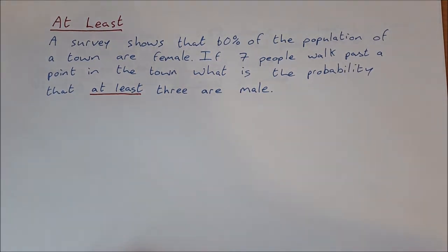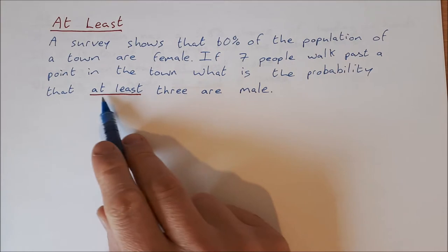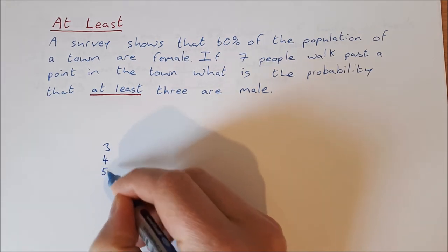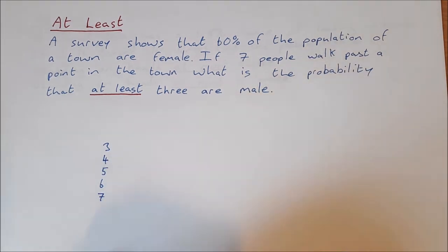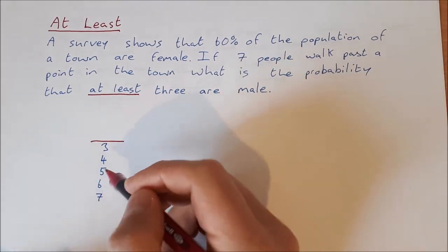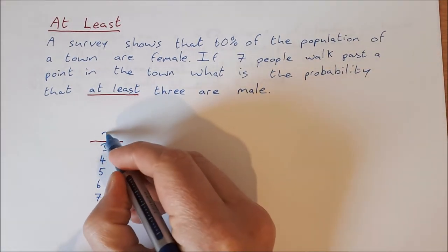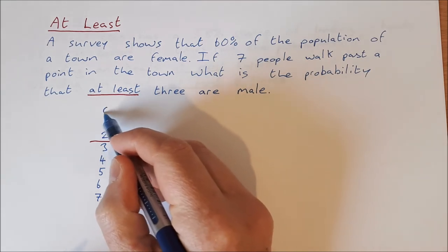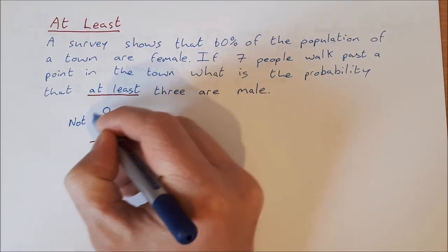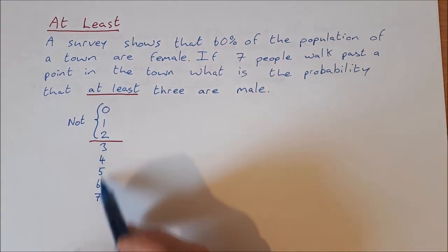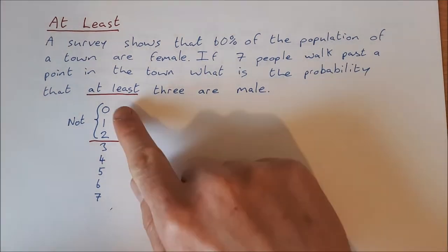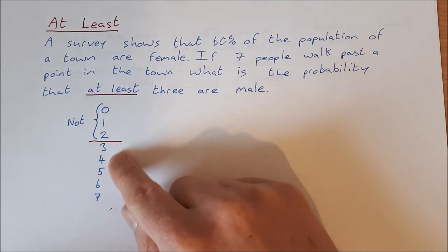This is an 'at least' question, so we need to look at what that means. 'At least three males' means we could have three, four, five, six, or seven males. But we can't have two males, one male, or no males. So I want to look at which is easier to calculate — it's easier to calculate three things than five things.